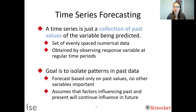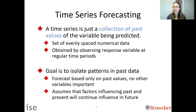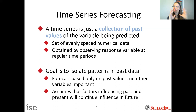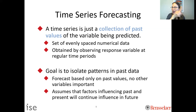The goal of time series forecasting is to isolate patterns in past data. We take historical data and identify what happened in the past that could be useful for predicting the future. It makes a key limiting assumption: the forecast is based only on past values — no other variables. It also assumes that factors influencing the past and present will continue in a similar way in the future.